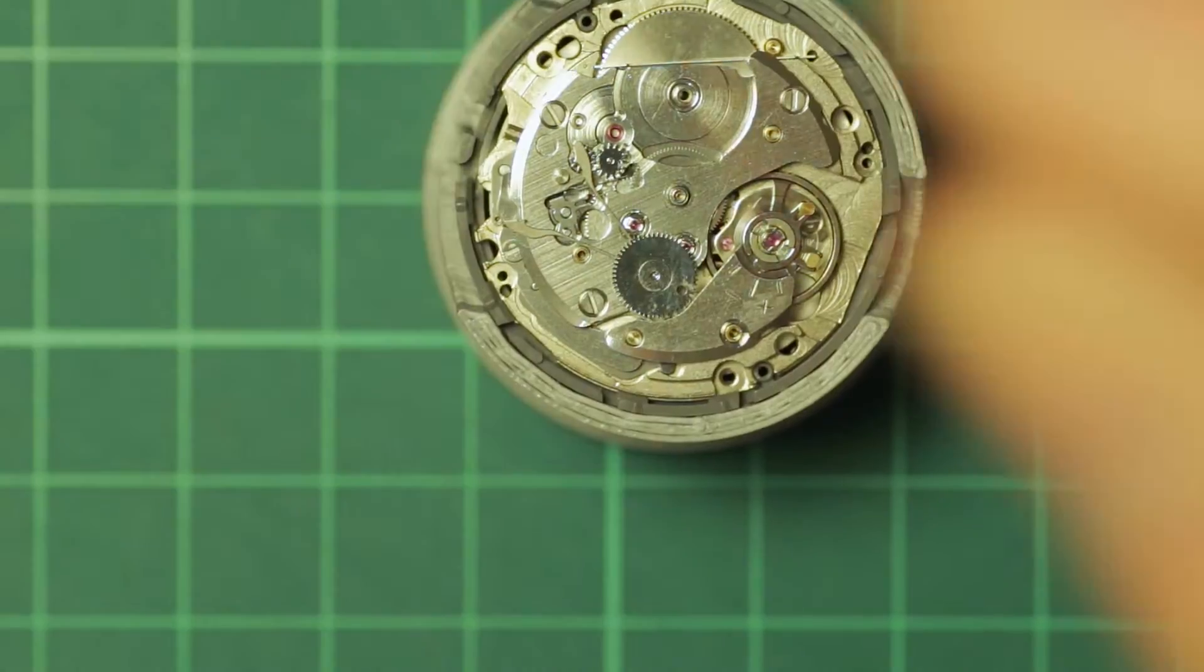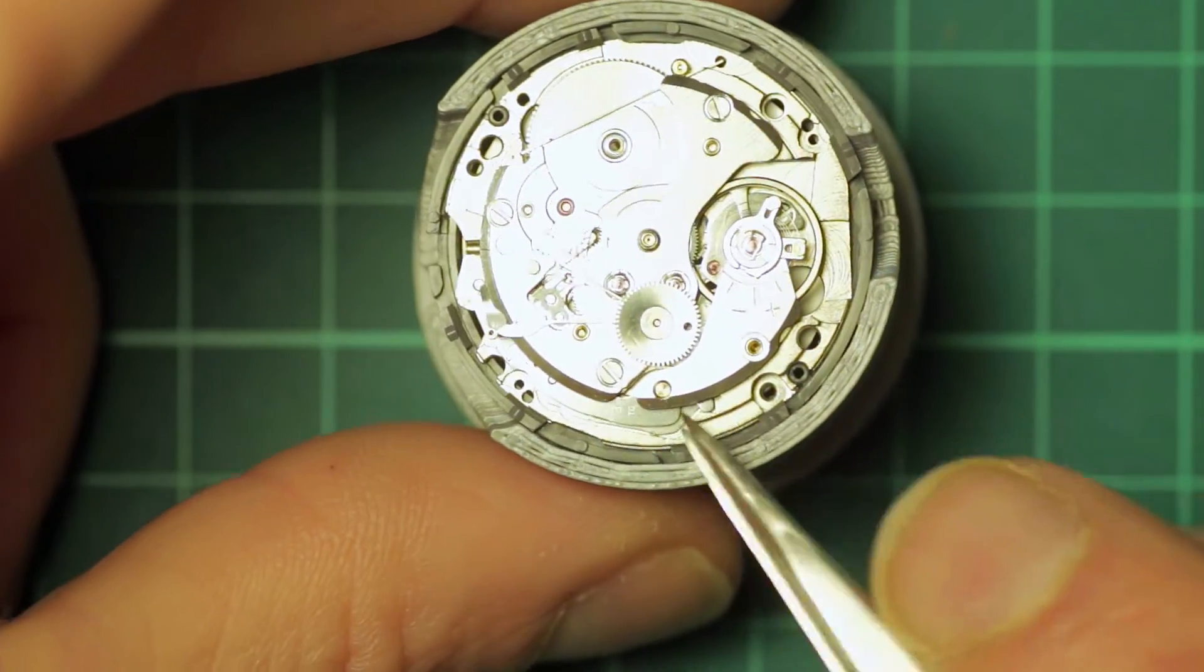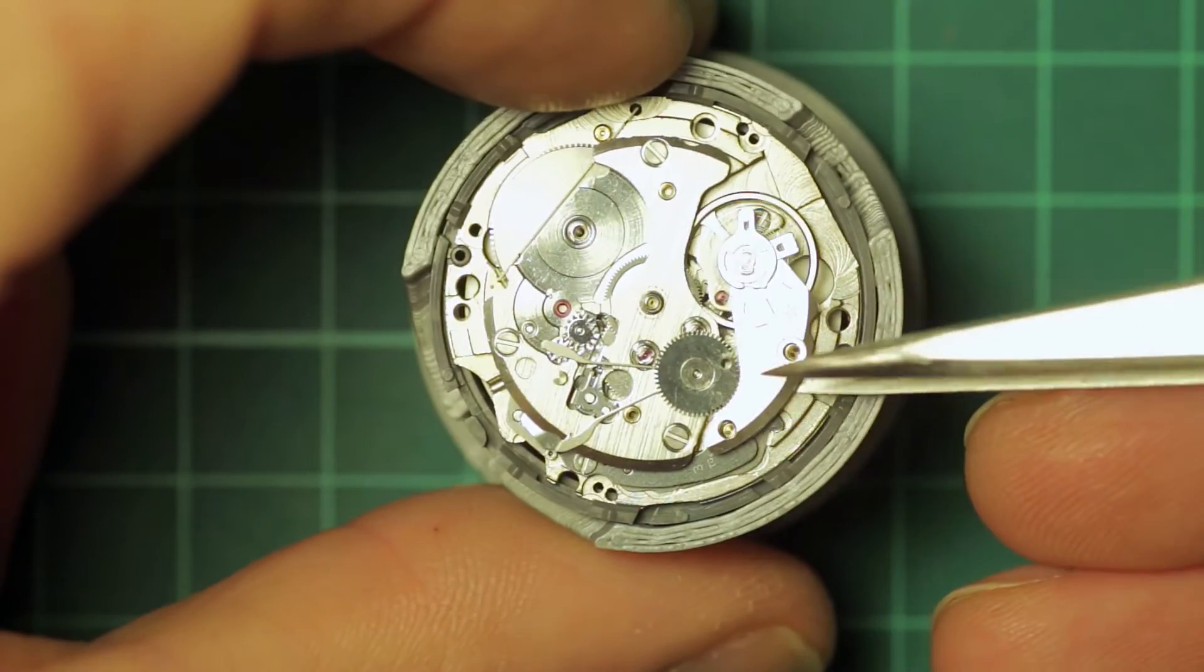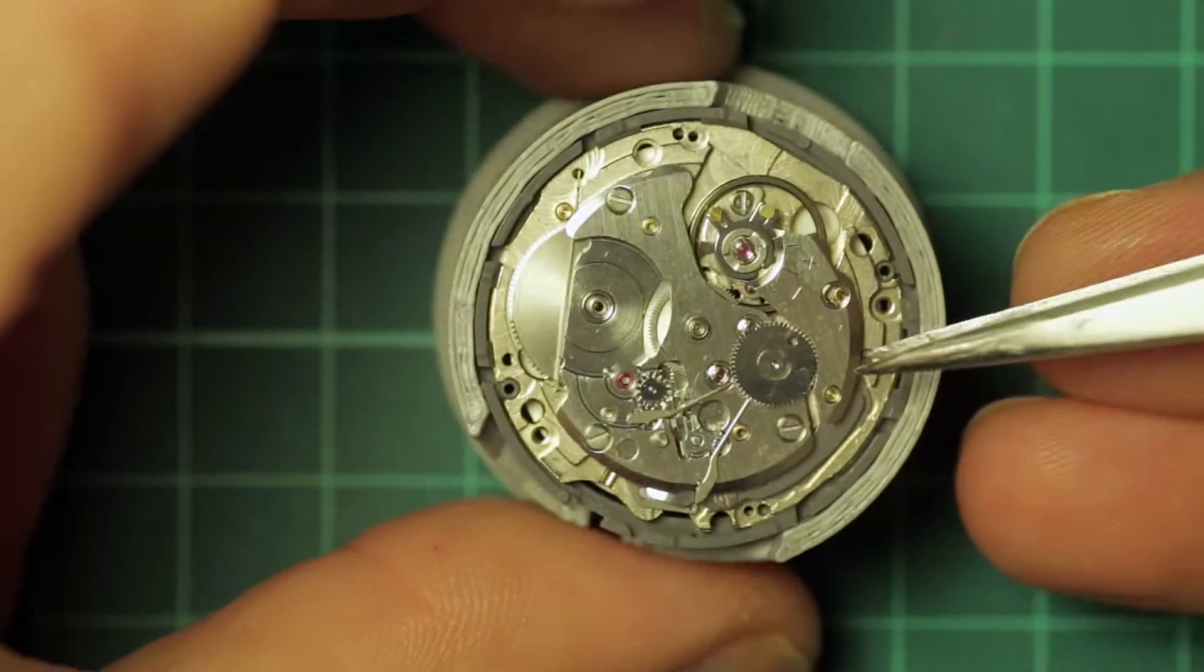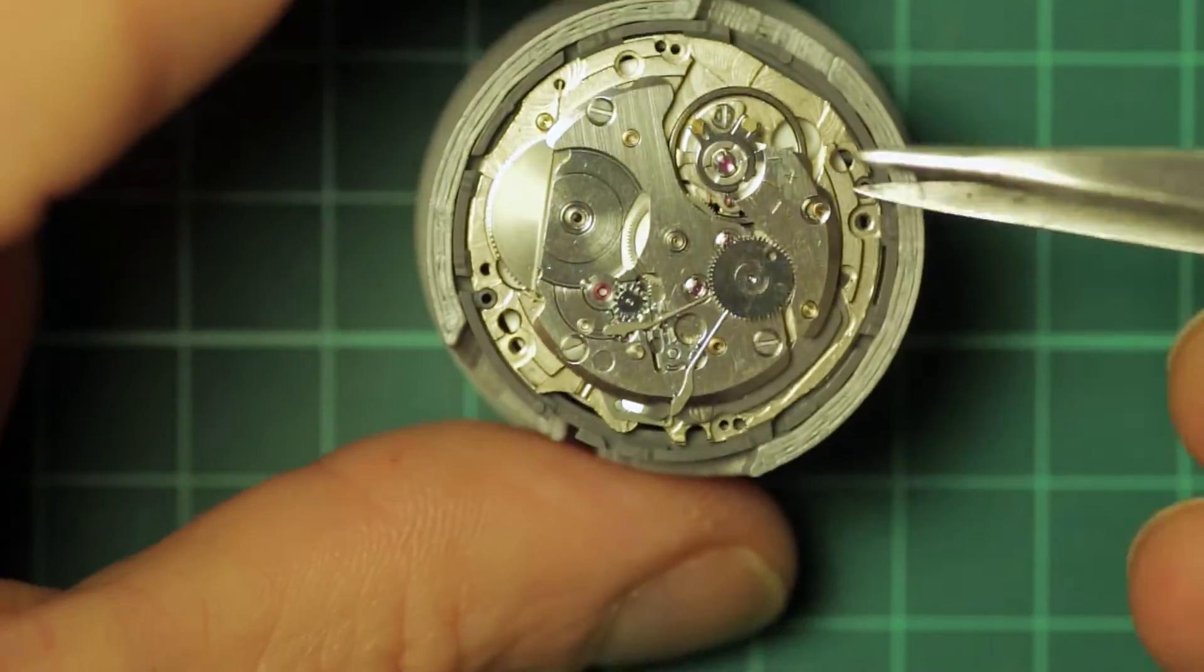But bearing in mind that this was a loose movement, ordinarily I would remove all of the automatic works while the watch was cased before uncasing it to disassemble the rest. So the balance unscrews and lifts away as you can see conventionally.